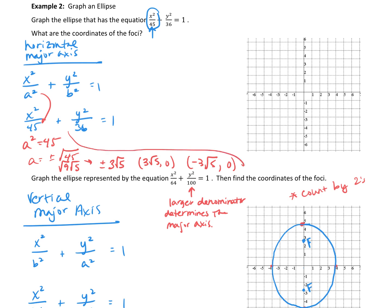Our b squared equals 36, which means b equals plus or minus 6. That's going to go on the minor axis, which is the y-axis, so (0, 6) and (0, -6).